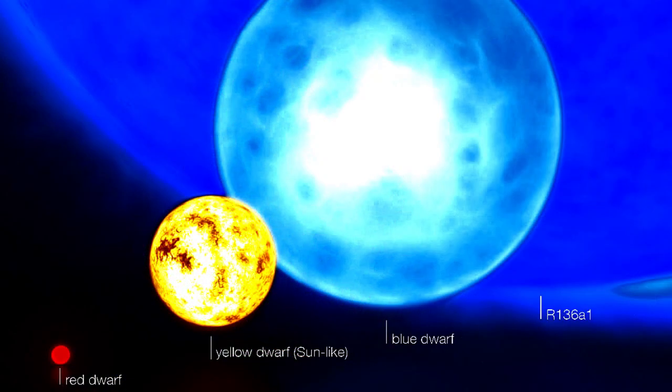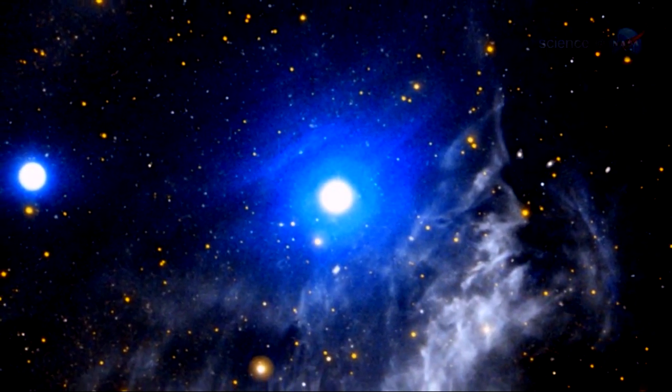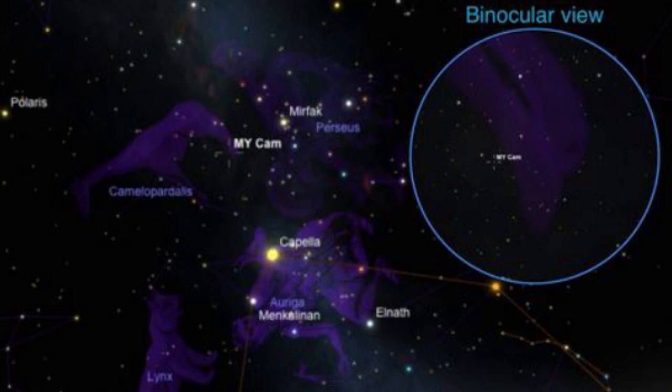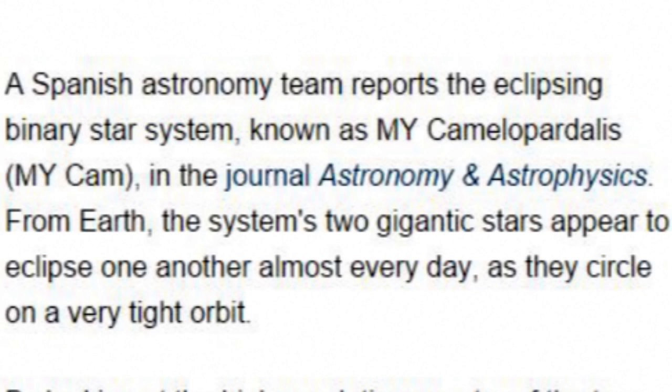The Spanish astronomy team reports that the eclipsing binary star system known as MY Camelopardalis, MY Cam for those too insecure to even try to pronounce Camelopardalis, in the journal Astronomy and Astrophysics. From Earth, the system's two gigantic stars appear to eclipse one another almost every day as they circle on a very tight orbit.